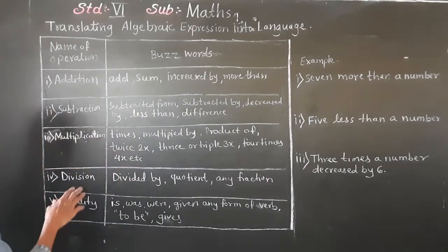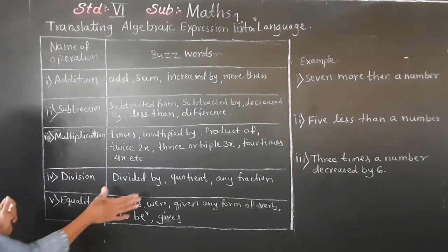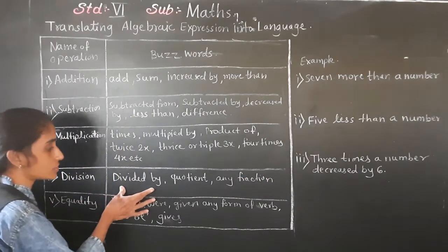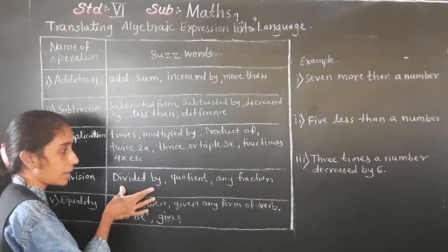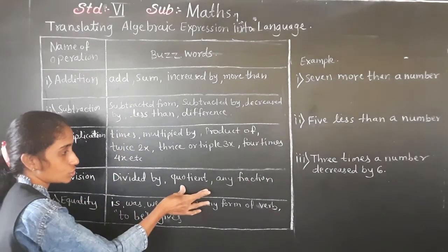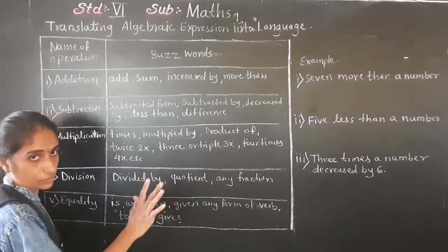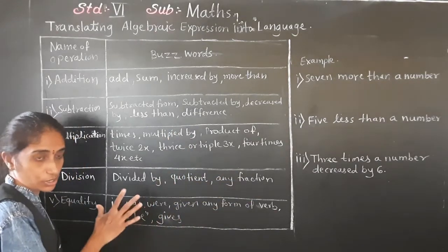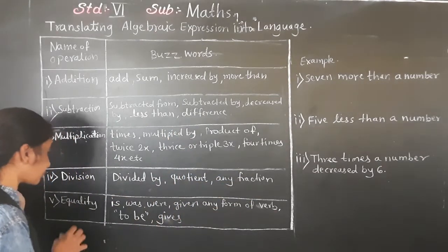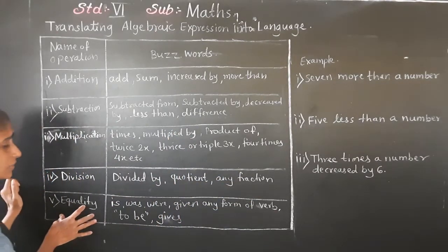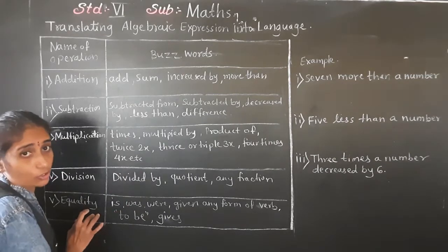In division, the words we use are: divided by, quotient, or any fraction. For equality, words like is, was, were, given — any form of the verb 'to be' — show equality.